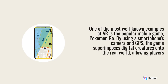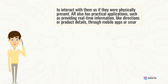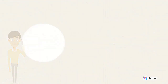One of the most well-known examples of AR is the popular mobile game Pokemon Go. By using a smartphone's camera and GPS, the game superimposes digital creatures onto the real world, allowing players to interact with them as if they were physically present. AR also has practical applications, such as providing real-time information like directions or product details through mobile apps or smart glasses.